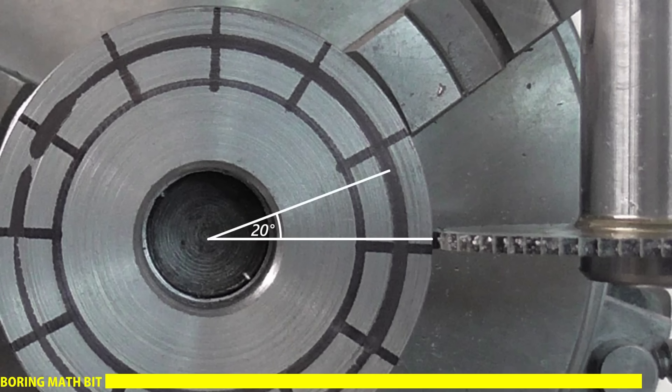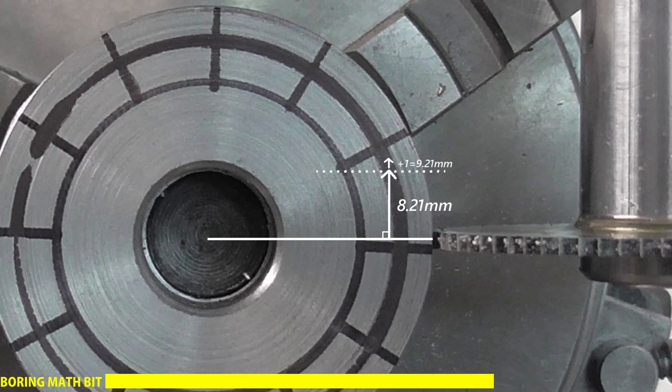The sine of 20 degrees multiplied by the radius of the pitch circle is 8.21 millimetres. This is the height I need to raise the saw vertically. I also need to add half the thickness of the saw, in this case 1 millimetre, so that the bottom edge cuts on the flank of the tooth.